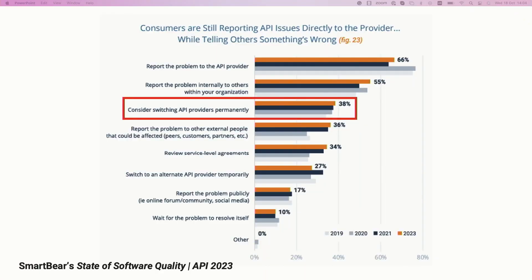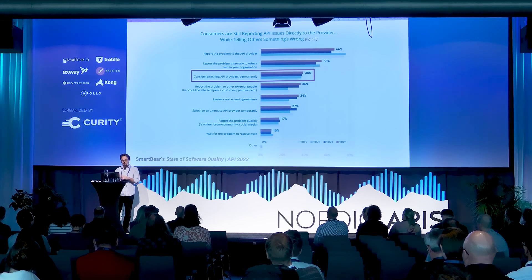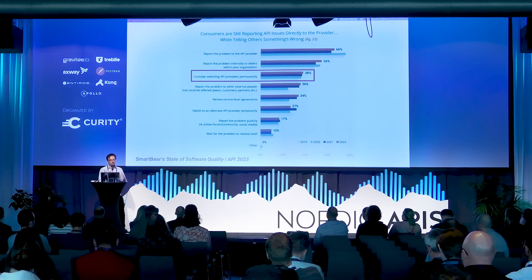API design is tremendously important for our APIs. If you check out the SmartPay report on the state of software quality from this year, nearly 40% of respondents are willing to change providers if the API they are working with isn't easy to work with, or if documentation isn't good. This matches my own experience — I was recently talking to an organization that is losing customers because their API is increasingly difficult to work with and documentation is increasingly out of sync with the code.